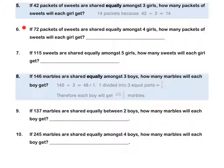Pause this video to complete Questions 6 and 7. Question 8. If 145 marbles are shared equally amongst 3 boys, how many marbles will each boy get? 145 divided by 3: do a division sum on the side and you will get an answer of 48 remainder 1. This one remaining marble divided into 3 equal parts will be one third. Therefore each boy will get 48 and one third marbles. Pause this video to complete Questions 9 and 10 by yourself.